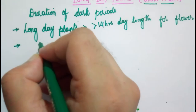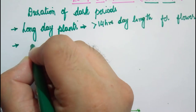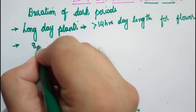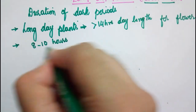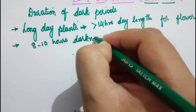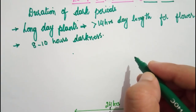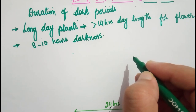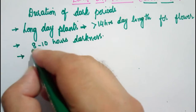The required day length can range from 14 to 16 hours, and they require night periods of only 8 to 10 hours. Beyond this, if the darkness is longer, long day plants don't flower. So when the photoperiod is less than 14 hours and darkness is greater than 8 hours, long day plants usually don't flower.